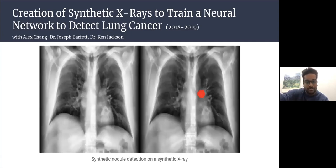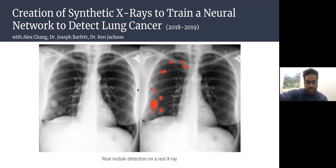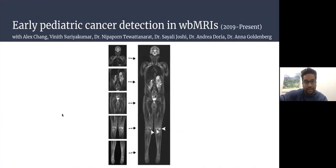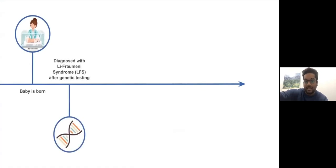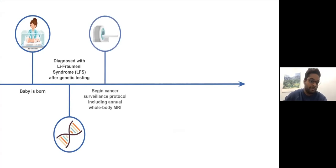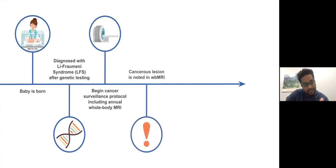This is the result from a synthetic nodule on a synthetic X-ray — it was placed right there and the network did a good job identifying it. On a real X-ray with a real nodule, there are more false positives around the bone area, but it also identifies the nodule. My other ongoing project is early pediatric cancer detection in whole-body MRIs — when a baby is diagnosed with cancer predisposition syndrome, there is a cancer surveillance protocol including an annual whole-body MRI.